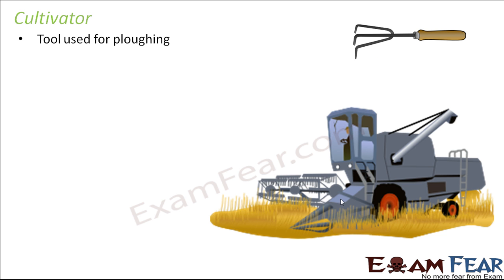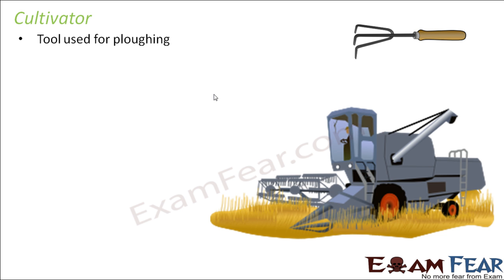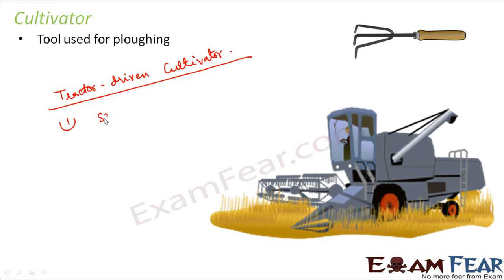That is why there are tractor-driven cultivators. A huge tractor has the cultivator fitted towards its rear end, and as the tractor moves through the field, the cultivators continuously plow the land on their own. The advantages of tractor-driven cultivators are that they save time, it is a fast process, and they also reduce human labor significantly.